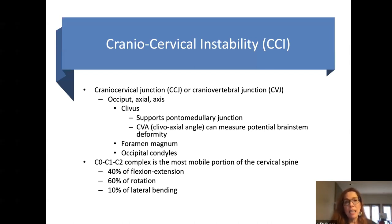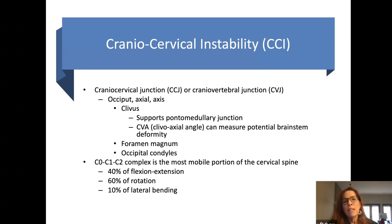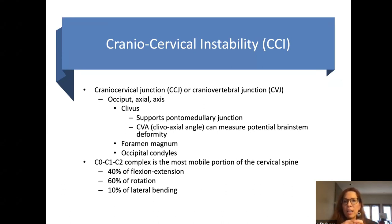In hypermobility type EDS, because it is a connective tissue disorder, we very often see cranial cervical instability, Chiari, and tethered cord. Chiari is seen in association with cranial cervical instability — CCI can complicate Chiari. It's important to recognize when CCI exists. CCI is basically an unstable C0, C1, and sometimes C2 joint. When that joint is unstable, it can cause what we refer to as cervical medullary syndrome — compression of the ventral brainstem, where the medulla oblongata sits — compression of the vertebral arteries, and sometimes alteration of cerebrospinal fluid flow.